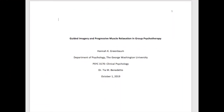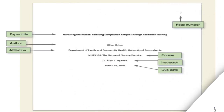Beginning with the title page, you should include the title of the paper, bolded, the student's name as the author, the college affiliation, the course that you're enrolled in, the instructor's name, and the due date. And don't forget to make sure that the page number is in the top right corner.